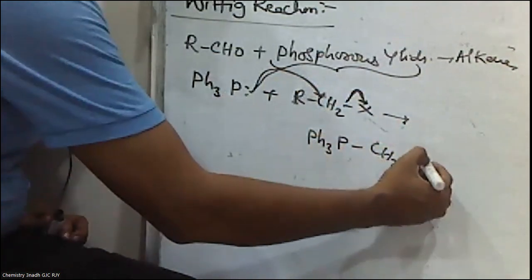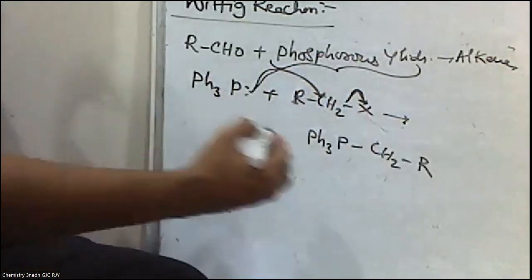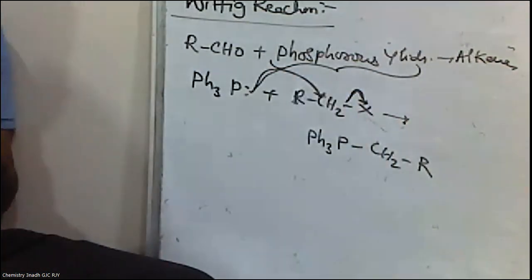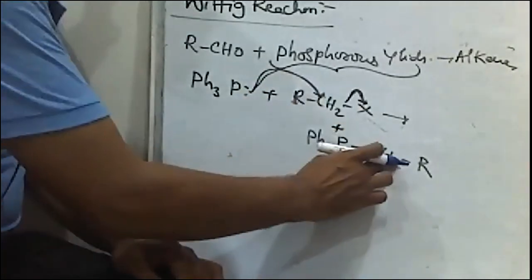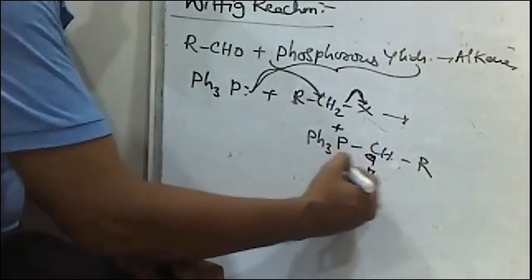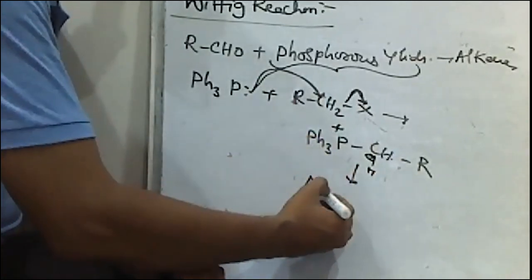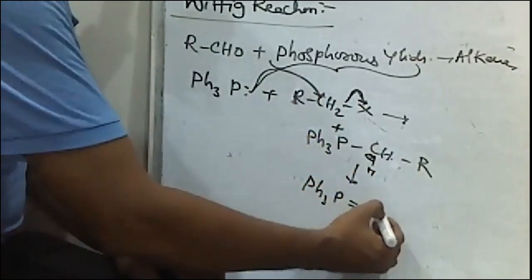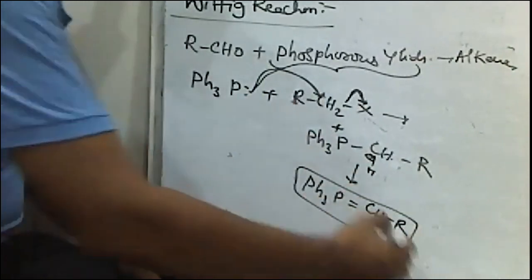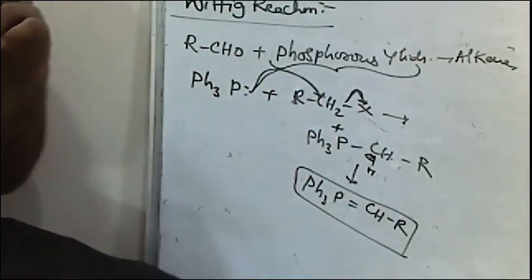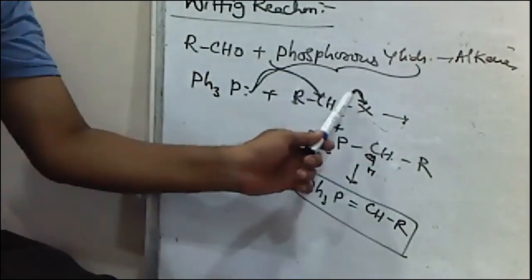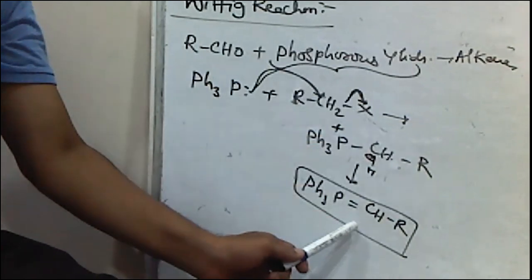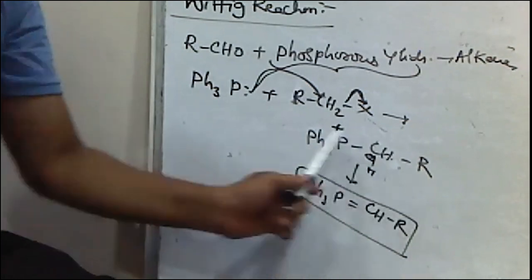Here on the CH2 group, carbon retains a charge, and in the next step it rearranges to give Ph3P double bond CH2. This compound we are calling the phosphorous ylide. When triphenylphosphine is treated with alkyl halides, you will get ylides having this type of general formula.